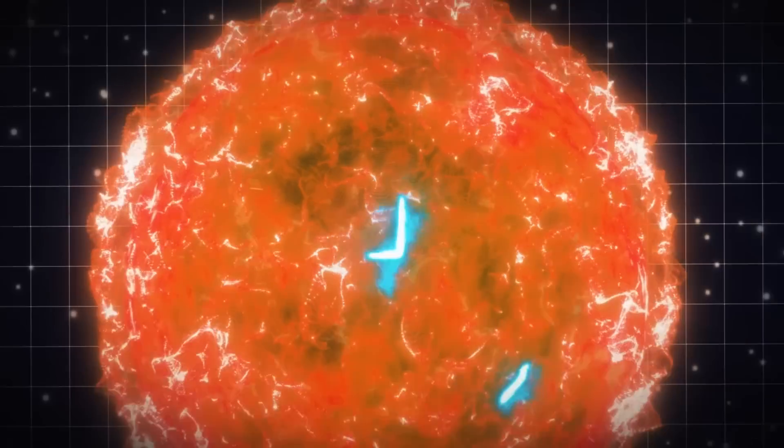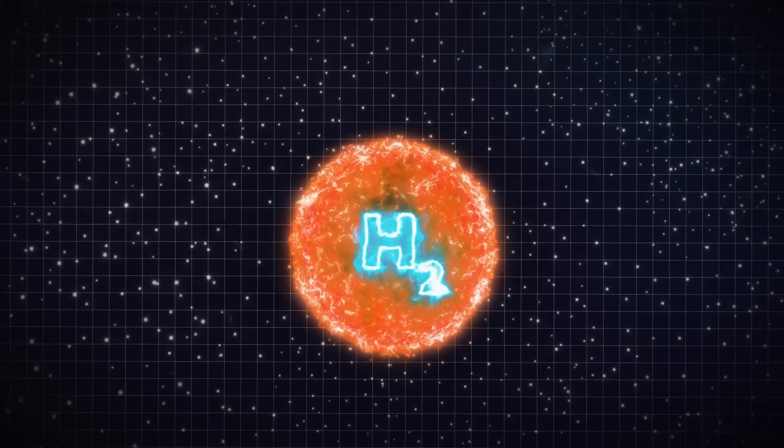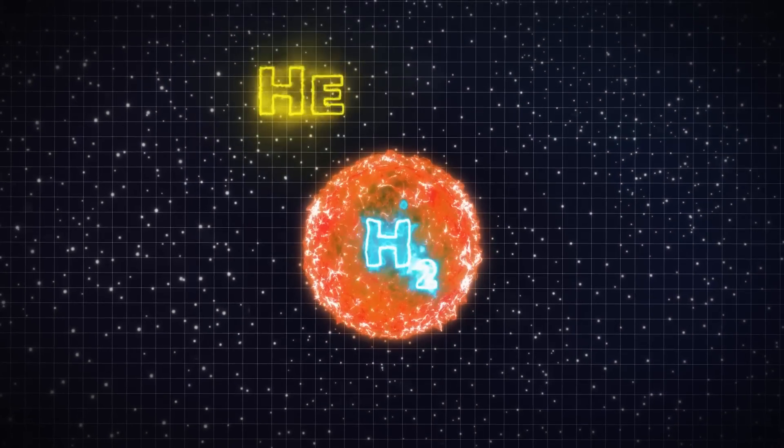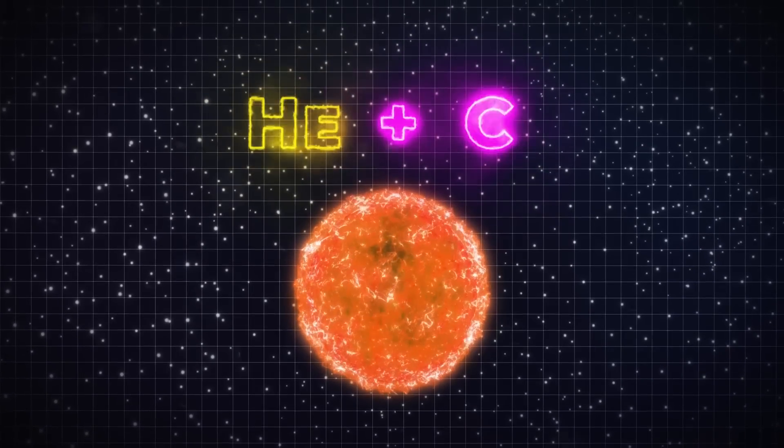This energy travels to the star's surface and is released as a photon into space. As the star ages, its primary fuel, hydrogen, runs out, and helium starts to combine with carbon to form carbon.